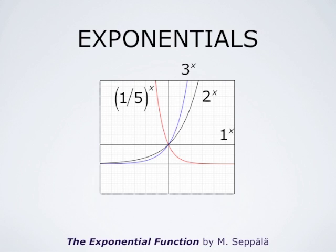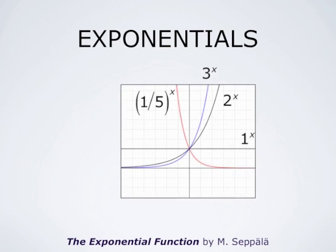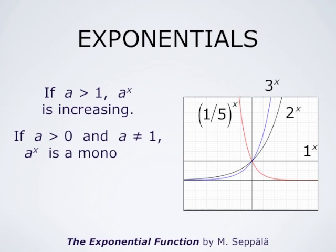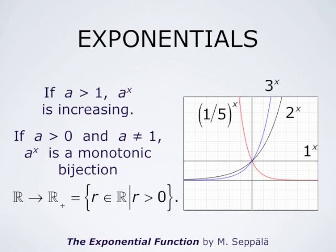We conclude that if a is larger than 1, then a to the power x is increasing. And if a is positive and different from 1, then a to the power x is a monotonic bijection from the set of real numbers to the set of positive real numbers.